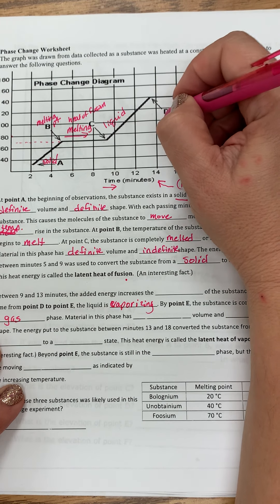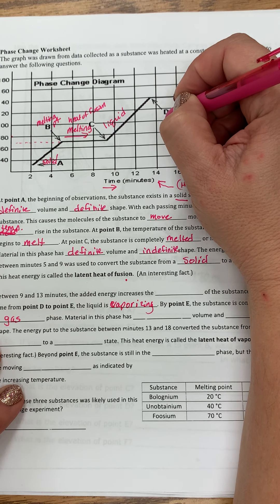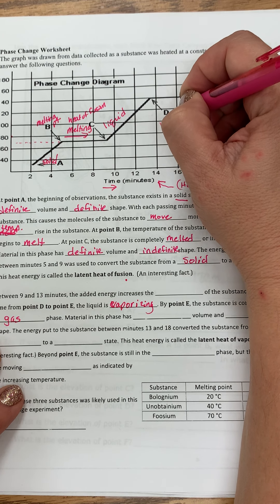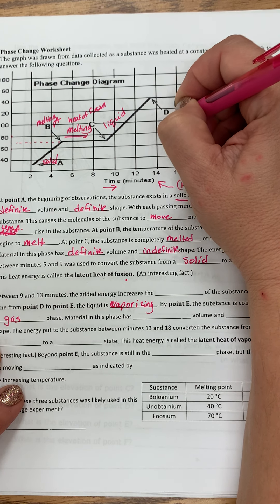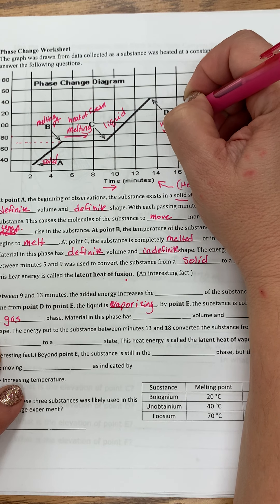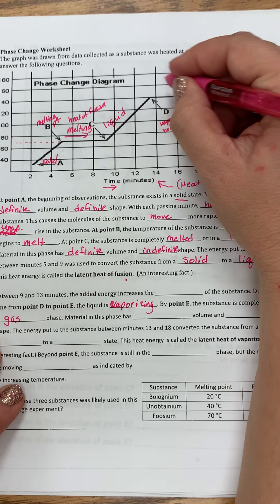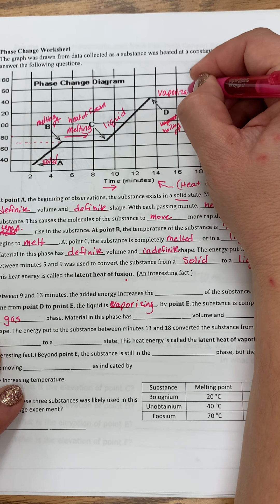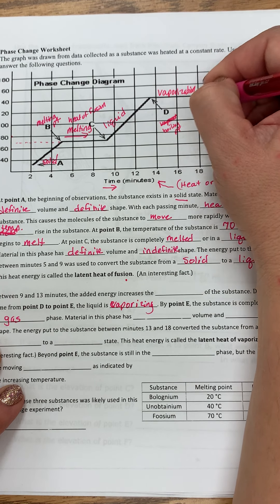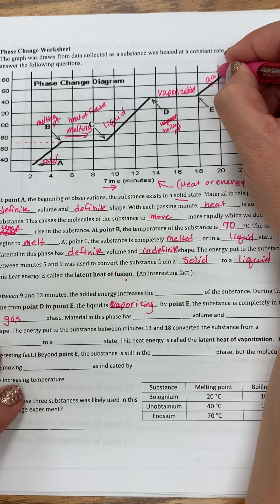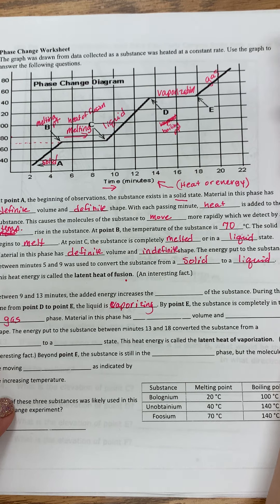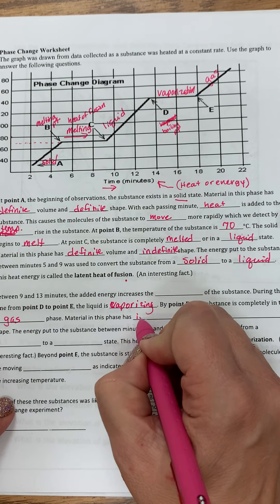By point E, the substance is completely in the gas phase. So here, this would be the vaporization point, boiling point is what we call it. Then this is vaporization. Sometimes we call it evaporation. And then here, it's a gas.